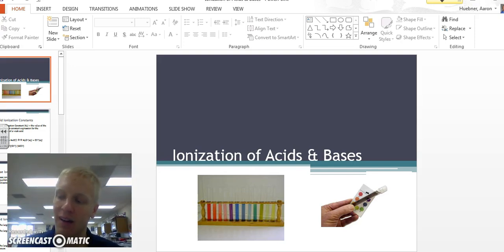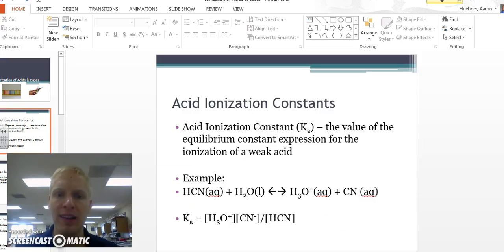These are a specific type of Keq or equilibrium constant. Ka is the value of the equilibrium constant expression for the ionization of a weak acid. If you have a strong acid or strong base, you are not going to use Ka or Kb. They are used only for weak acids and bases.